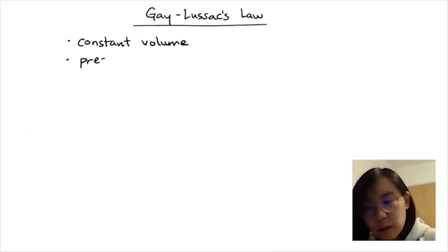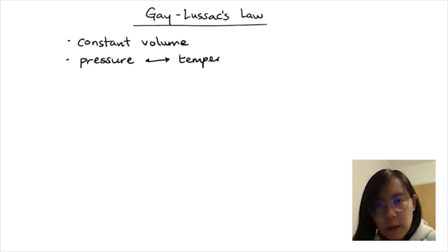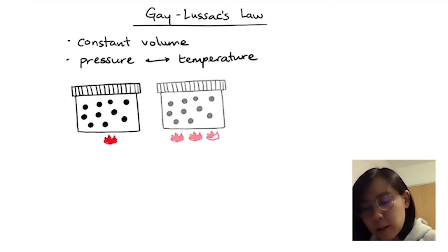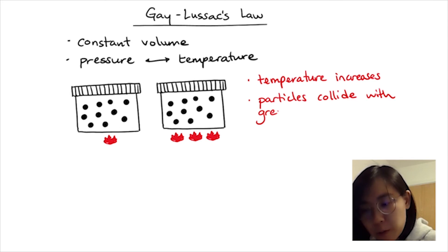And onto our final law to relate pressure to temperature. We need a fixed volume this time. So we need to screw the lid on tight, making sure the gas cannot change its volume. By increasing the thermal energy, the collisions of gas particles will become more frequent and they can collide with greater kinetic energy. This means pressure increases.